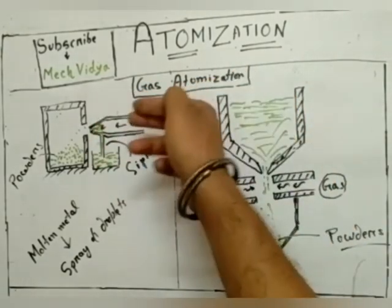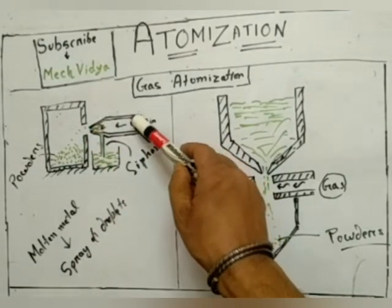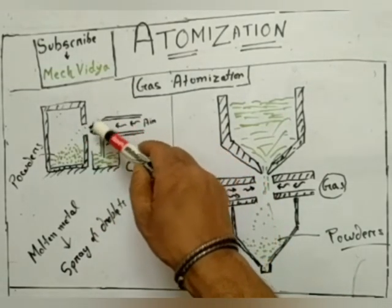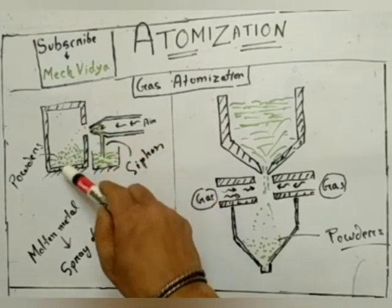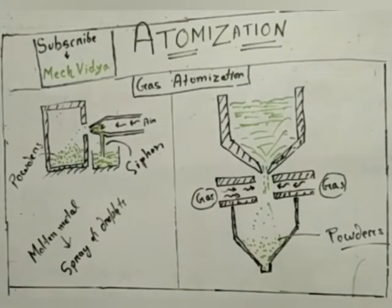When this jet of air strikes this molten metal, as a result this molten metal will come and collect in the collecting chamber in the form of small powders.